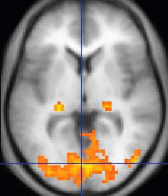Hydrogen has the most frequently imaged nucleus in MRI because it is present in biological tissues in great abundance, and because its high gyromagnetic ratio gives a strong signal. However, any nucleus with a net nuclear spin could potentially be imaged with MRI. Such nuclei include helium-3, lithium-7, carbon-13, fluorine-19, oxygen-17, sodium-23, phosphorus-31, and xenon-129. Sodium-23 and phosphorus-31 are naturally abundant in the body, so can be imaged directly. Gaseous isotopes such as helium-3 or xenon-129 must be hyperpolarized and then inhaled as their nuclear density is too low to yield a useful signal under normal conditions. Oxygen-17 and fluorine-19 can be administered in sufficient quantities in liquid form such that hyperpolarization is not a necessity. Using helium or xenon has the advantage of reduced background noise, and therefore increased contrast for the image, because these elements are not normally present in biological tissues.